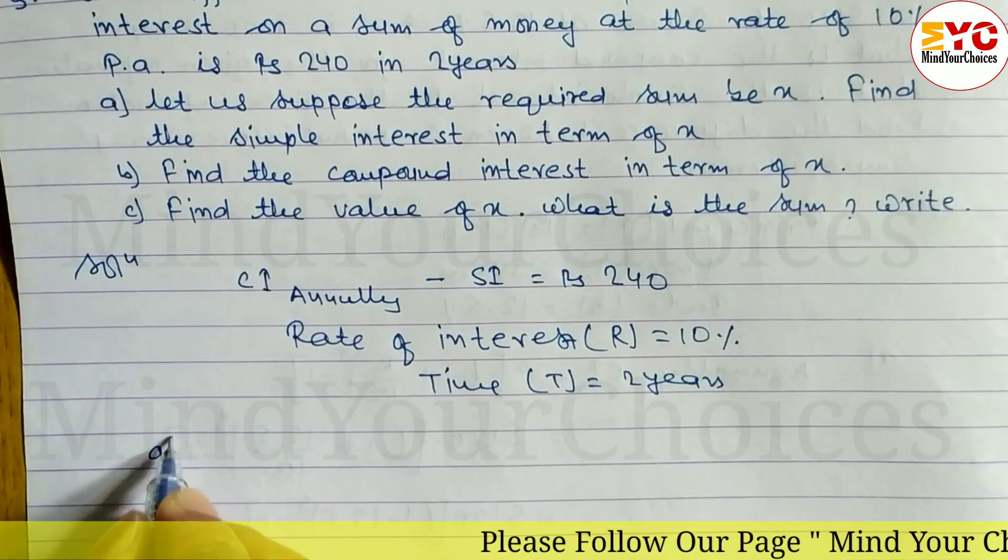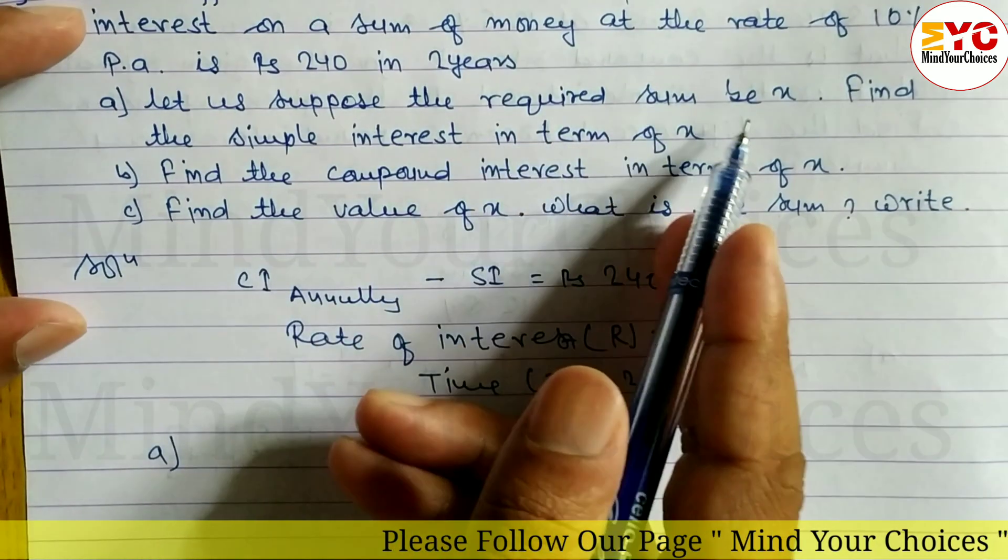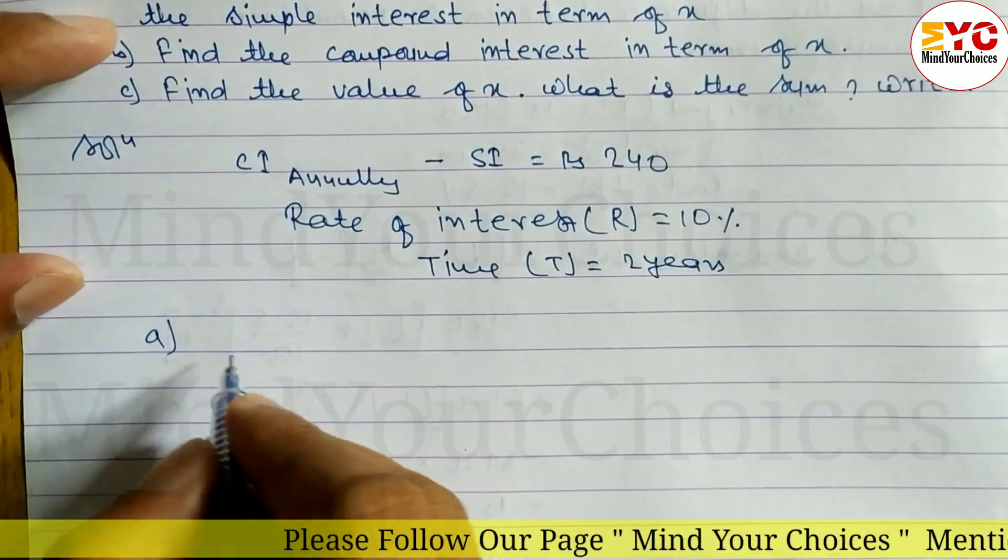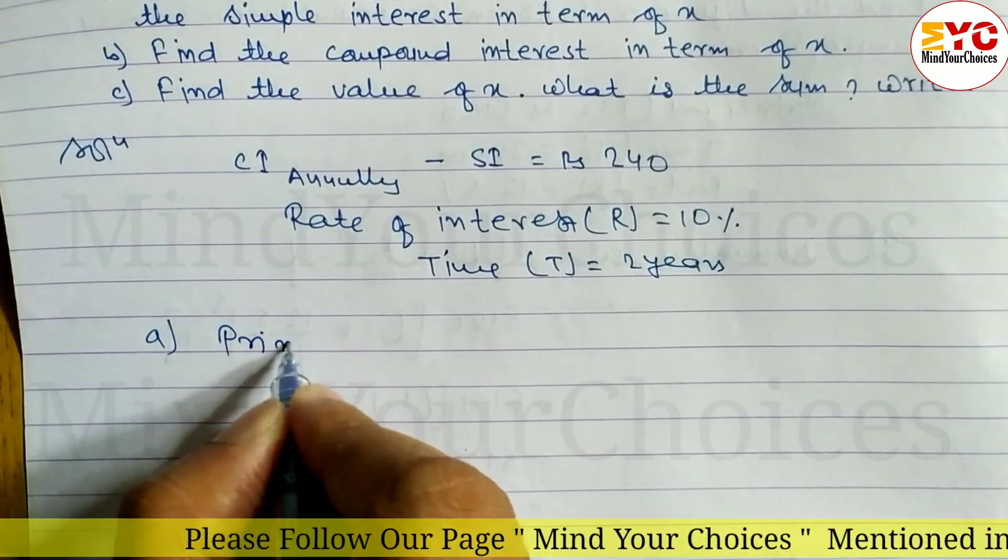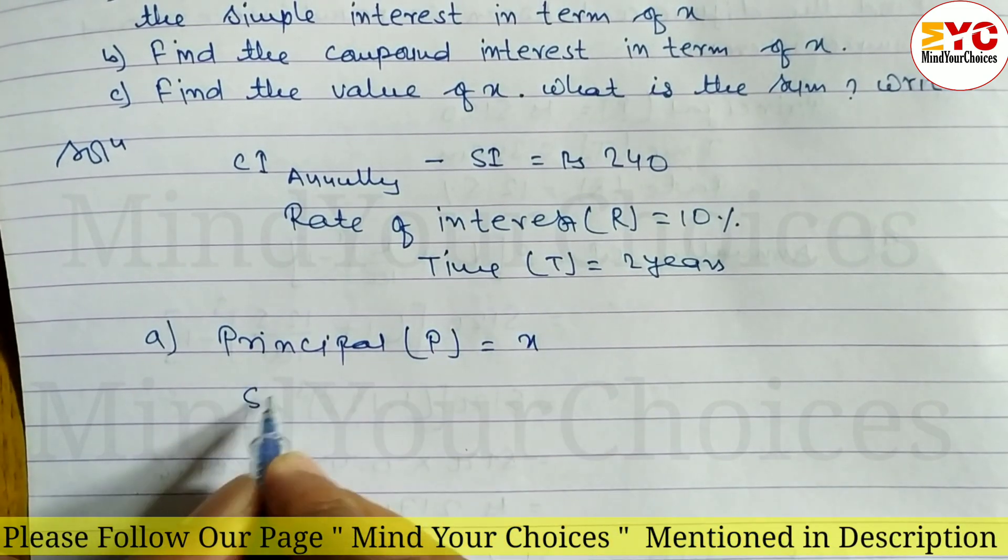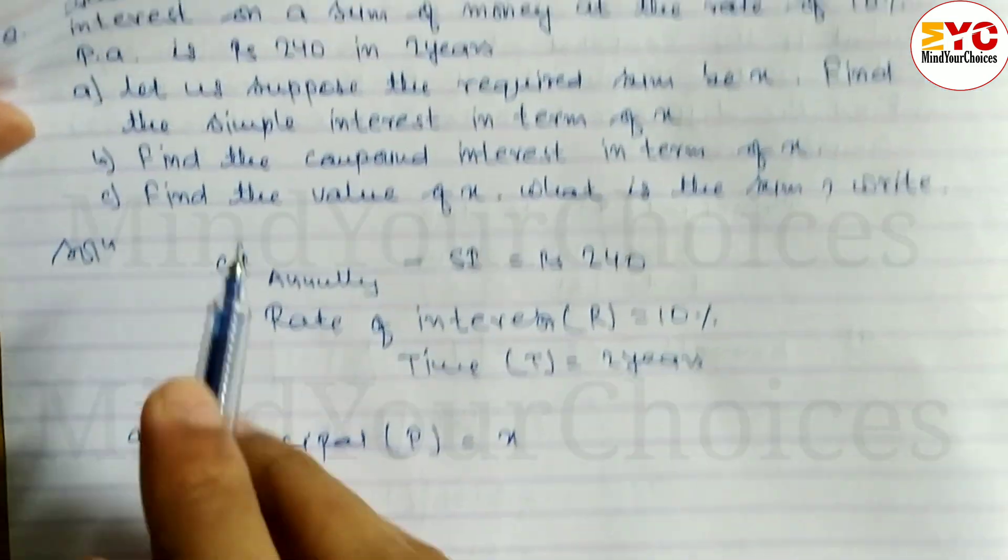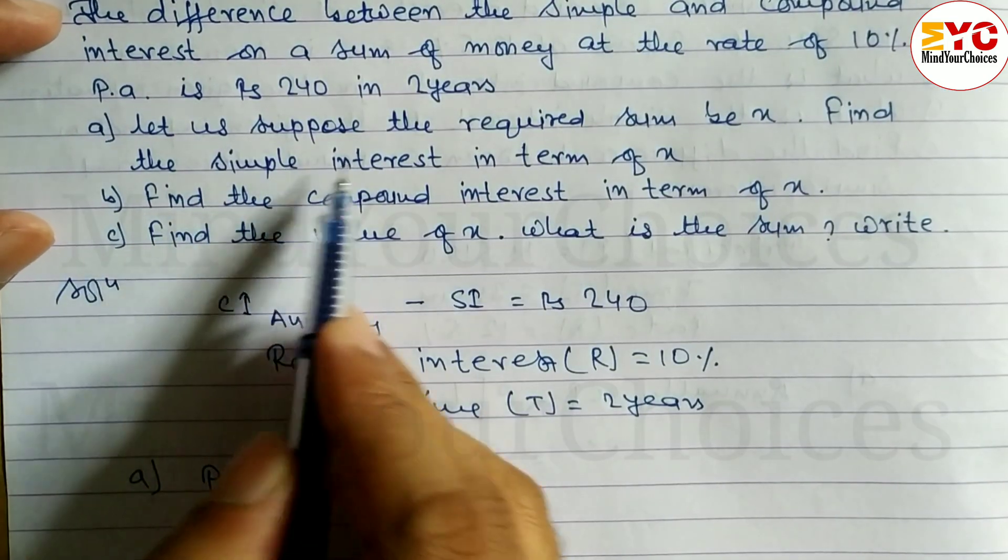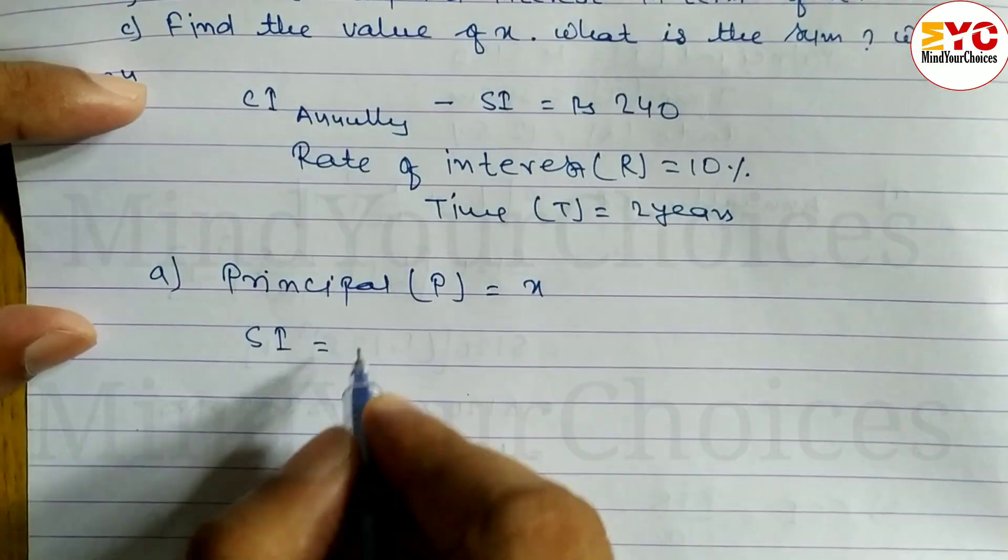Question number a: let us suppose the required sum be x. The principal P is equal to x. Now we have to find out simple interest in term of x.